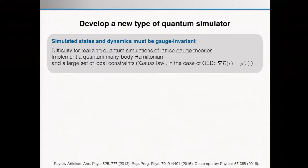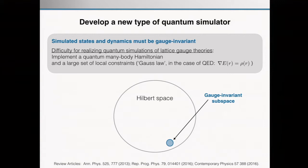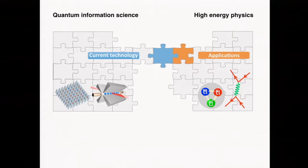This is just a pictorial representation: I have some quantum hardware which offers me a certain Hilbert space, and I really want to stay in the gauge-invariant subspace, which is only a small fraction of that. To give you the meta-picture: this is the aim — to use current technology like trapped ions, cold atoms in optical lattices, superconducting architectures, and individually trapped Rydberg atoms, and connecting these things with interesting toy models and problems from high-energy physics. The idea is really to bridge these two fields.